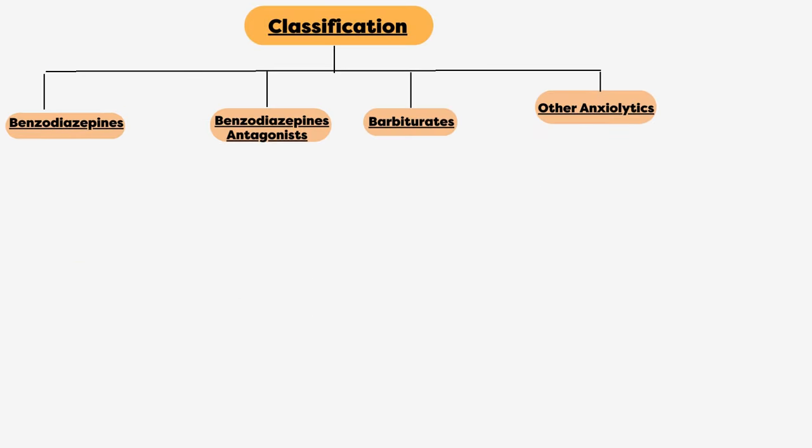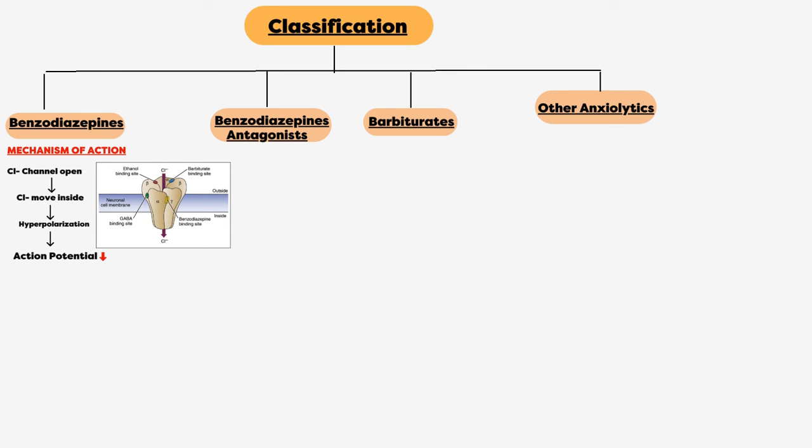Now we will discuss each drug in detail. First come benzodiazepines. It works by binding to GABA receptors at the junction between alpha and gamma subunits. It opens ligand-gated chloride channels. Chloride ions move inside the cell, causing hyperpolarization and decreasing the action potential.